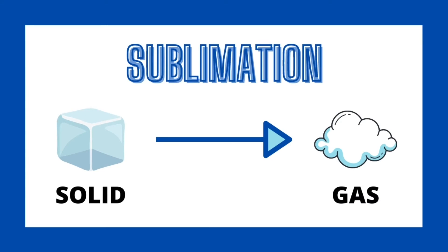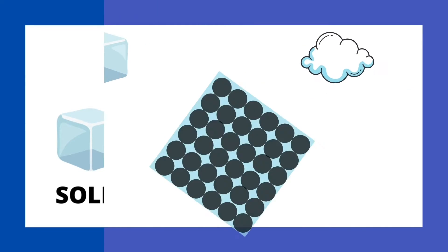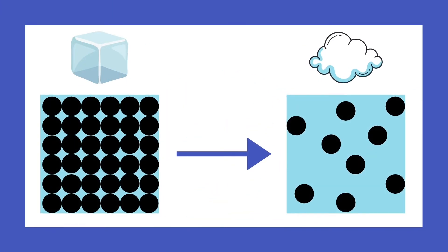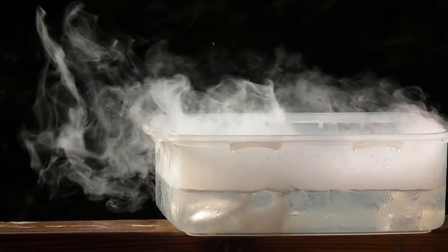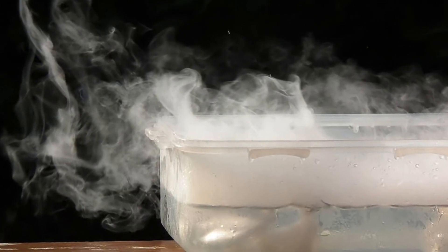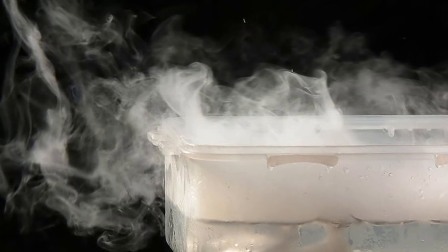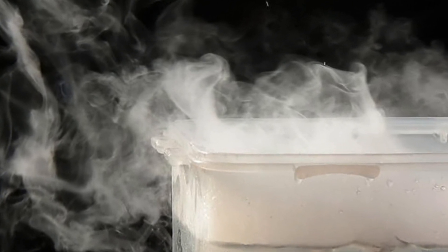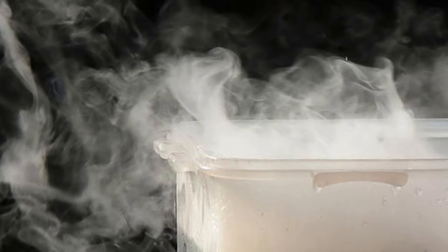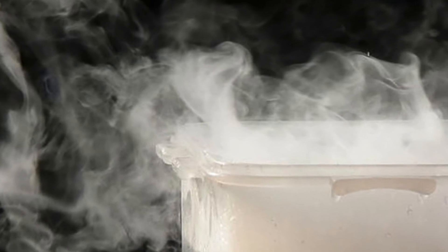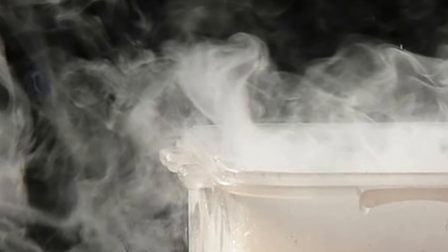Unlike the other terms we have covered so far, this one may be unfamiliar to you. Sublimation is the phase change from a solid to a gas. Sublimation is caused by heat absorption so intense that the solid skips the melting phase and instantly turns into a gas. This can happen in the water cycle when snow, which is a solid, becomes a water vapor without melting first. An example of sublimation is dry ice, which is a frozen form of carbon dioxide. When dry ice gets exposed to the air, it instantly changes its phase from solid to gas.